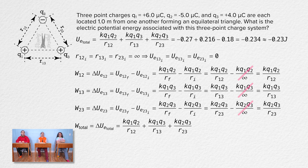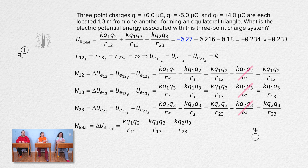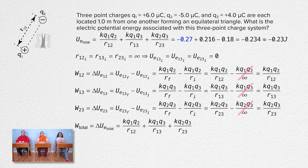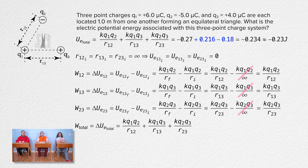The electric potential energy of the three-charge system equals the work it takes an external force to move charge two at constant velocity from infinitely far from charge one to a distance r12 from charge one, plus the work it takes an external force to move charge three at constant velocity from infinitely far from both charges to a location that is a distance r13 from charge one and a distance r23 from charge two.